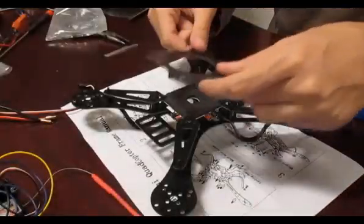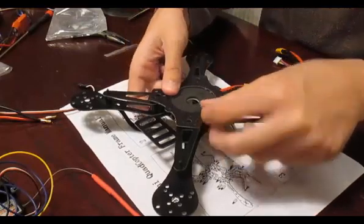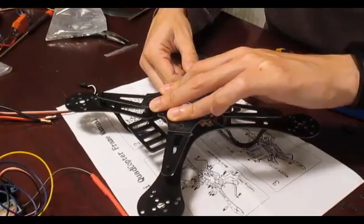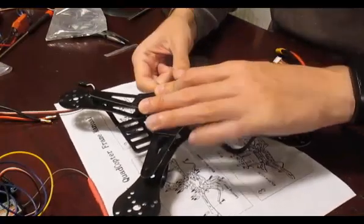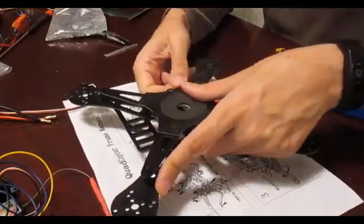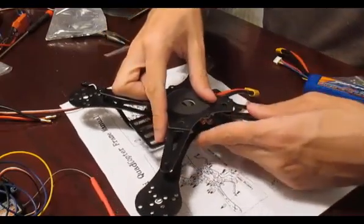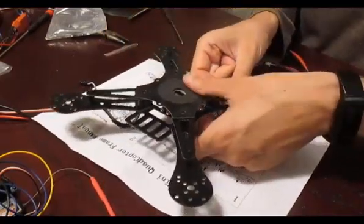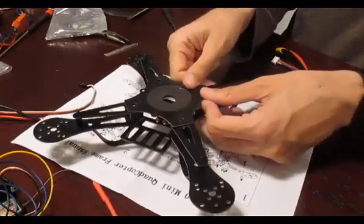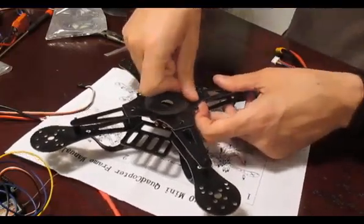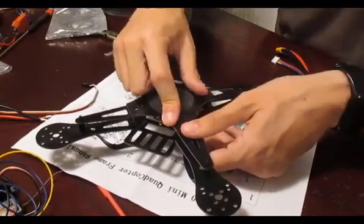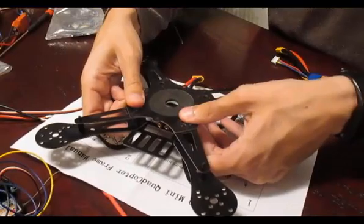I'm actually putting here this piece above the power distribution board just to have a little bit more stability. This piece of plastic is not really required but I think it gives a little bit more stability to the whole thing. As it's a brand new frame I wanted to have it built exactly as it says on the instructions, but if you want to skip that you can definitely do that.